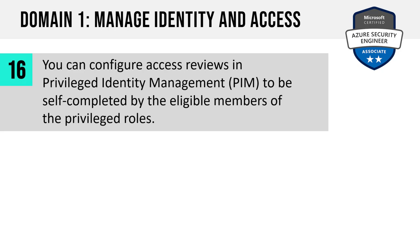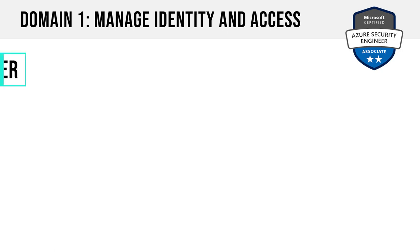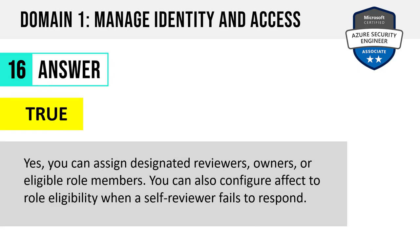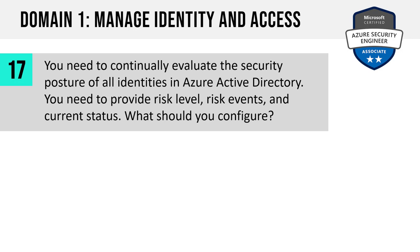Question 16. You can configure access reviews in Azure AD Privileged Identity Management to be self-completed by the eligible members of the privileged roles. True or false? The answer is true. You can allow designated reviewers to make these decisions — owners or the eligible role members themselves. You can also configure what happens to role eligibility when a self-reviewer fails to respond, such as take no action or revoke access.